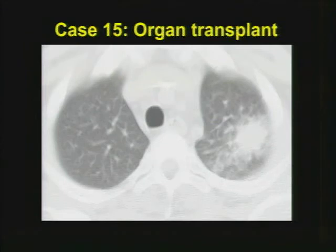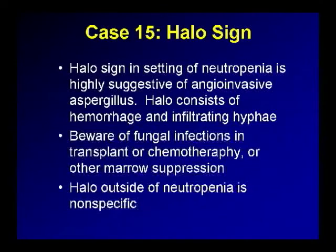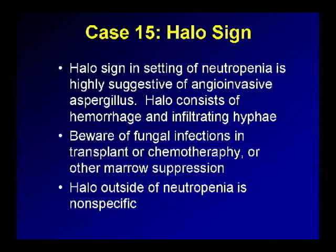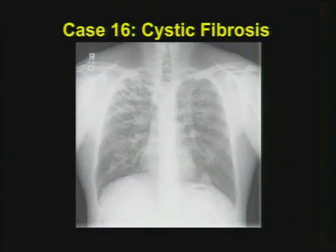Case number fifteen: an example of the halo sign on CT — ground glass opacity surrounding a mass in the apex in someone who is neutropenic. The neutropenic feature is very important: in the setting of neutropenia, the presence of a halo sign is highly suggestive of invasive aspergillus. Outside the setting of neutropenia, it's very nonspecific. Beware of fungal infections in your transplant patients and patients with severe immune suppression from chemotherapy or marrow suppression.